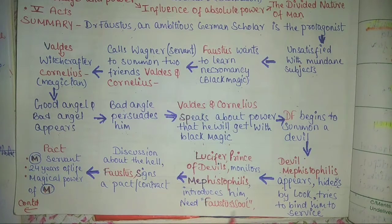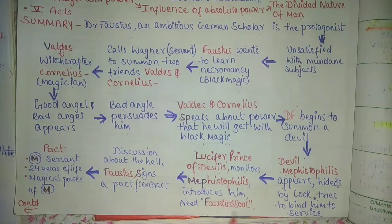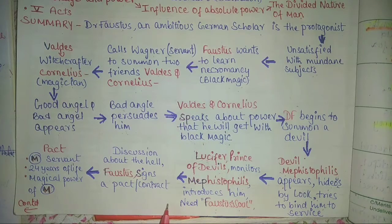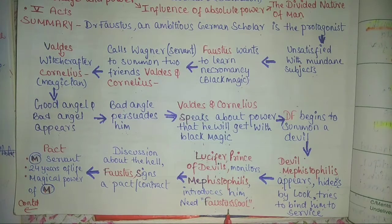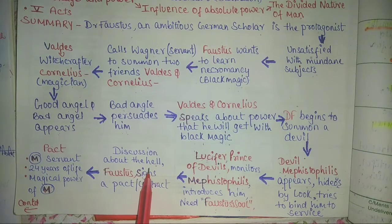Dr. Faustus becomes aware of Lucifer's power, and then says that Mephistopheles should convey a message to Lucifer that Dr. Faustus is ready to give his soul if Lucifer agrees with his terms and conditions. Mephistopheles goes back to Lucifer and tells him of Faustus' desire — that he wants to have Mephistopheles as his servant, and for that he is ready to give his soul. Mephistopheles then discusses the condition of hell, saying it has no limit and souls who come there suffer greatly.